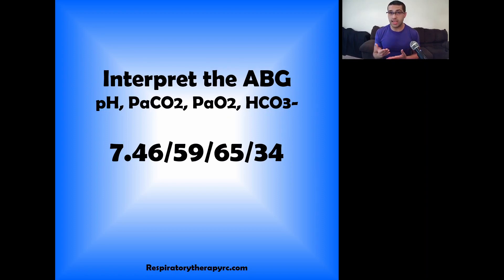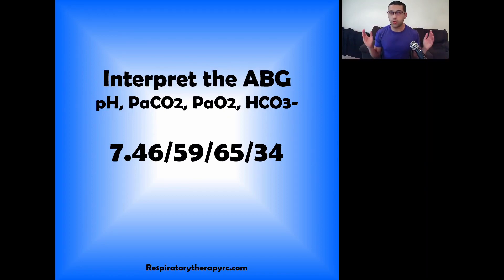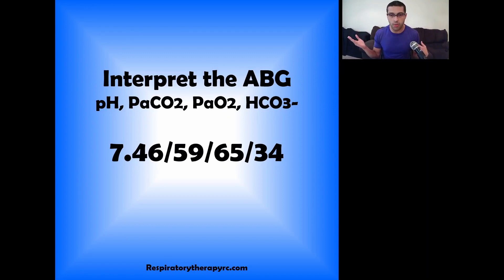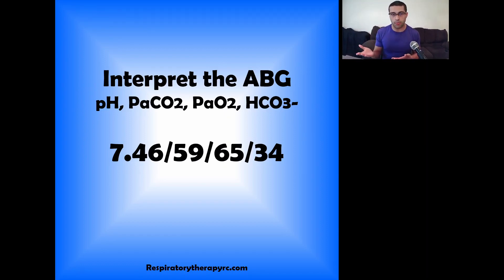So like I said in a previous video about my original rules for ABG interpretation, you always look at what is the primary cause. You have to look at the pH first — 7.46, so it's a little tiny bit alkalotic. 7.45 is the high side of normal. So what is pushing the pH up? It's the bicarb. They have a direct relationship — if bicarb goes up, pH goes up.